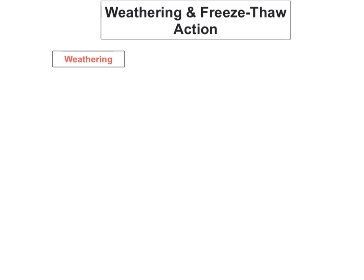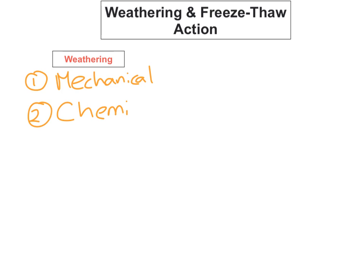With weathering, we have three different types: the first is mechanical, the second is chemical, and the third is biological. Mechanical and chemical weathering are more important than biological because they come up most in your examination.